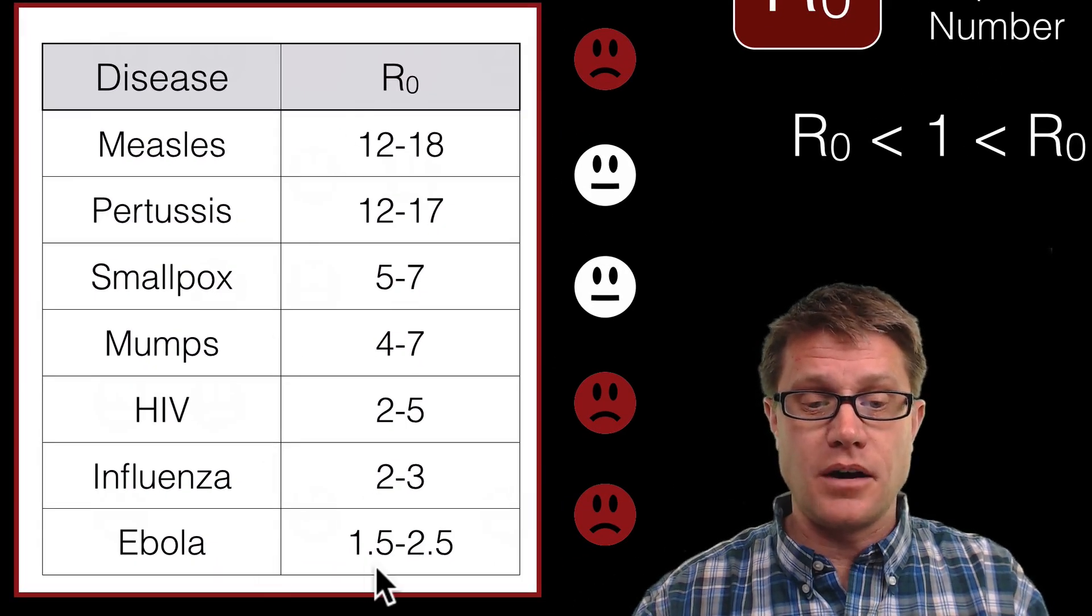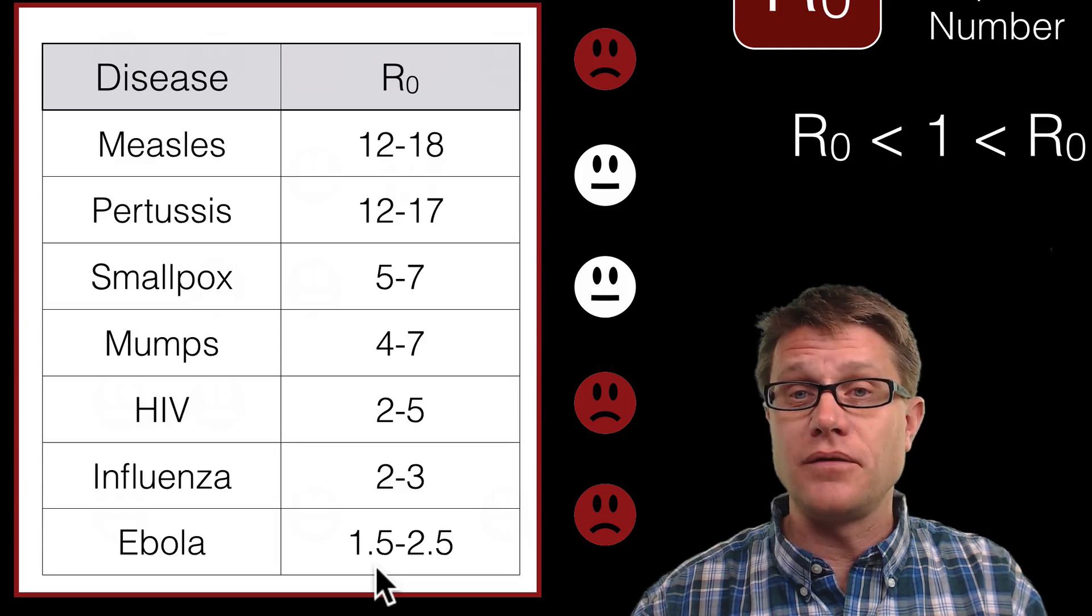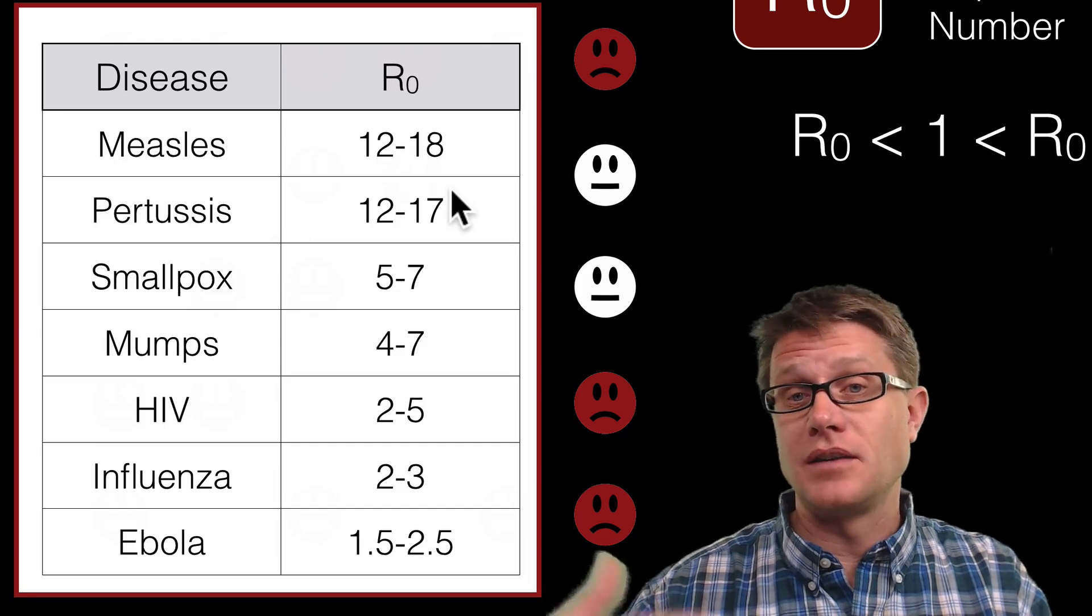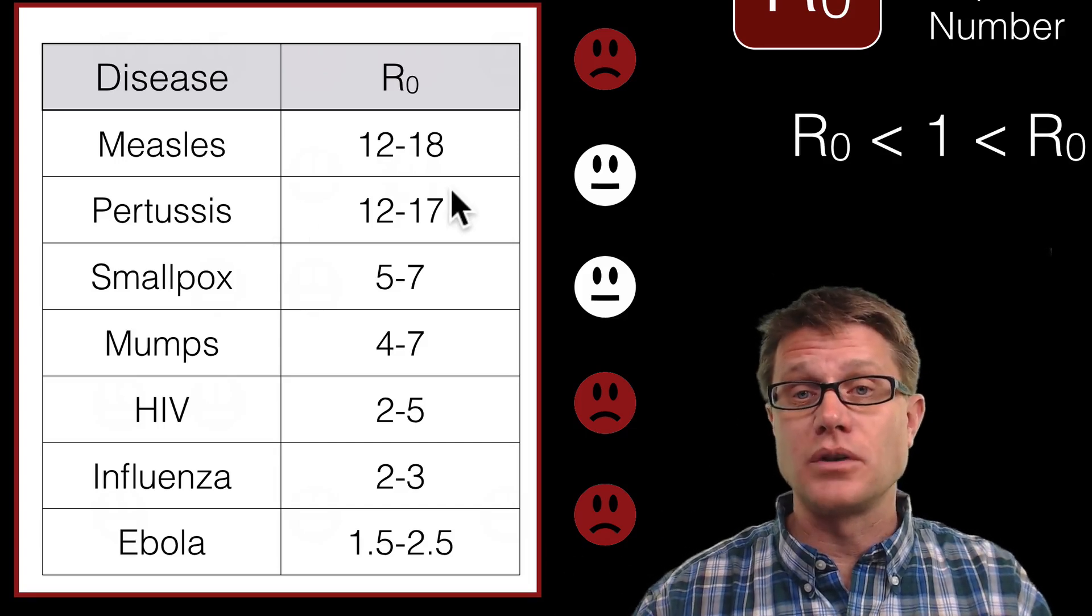So the recent outbreak of Ebola, R naught value 1.5 to 2.5. Smallpox 5 to 7. But some diseases like measles and whooping cough, the R naught value might be as great as 18. That is because it is an airborne transmission.